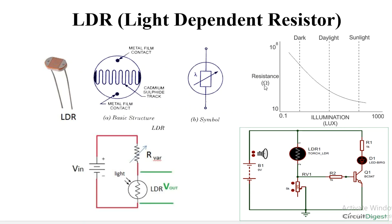Here you can see this graph — it is a graph between resistance and illumination. Illumination is nothing but the brightness, whose unit is called LUX. The resistance on the y-axis ranges from 10 ohms to 10 to the power 8 ohms, and illumination ranges from 0.1 to 1000 LUX. In the dark region, resistance is very high. As the illumination — the brightness — increases slowly, the resistance decreases. In terms of night to day, during dark nighttime conditions, as daylight comes in and brightness increases, the resistance decreases.